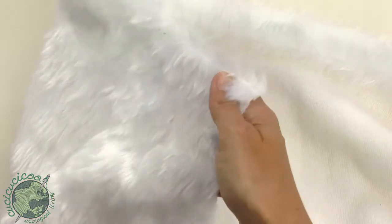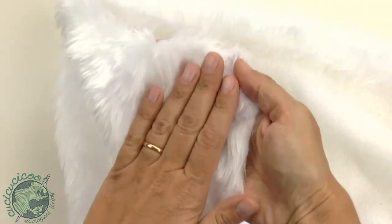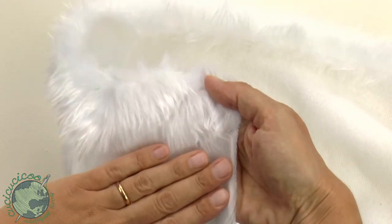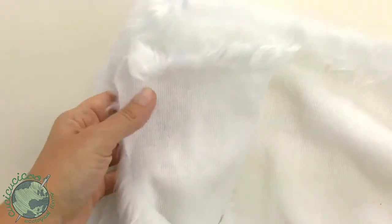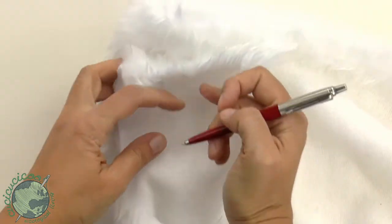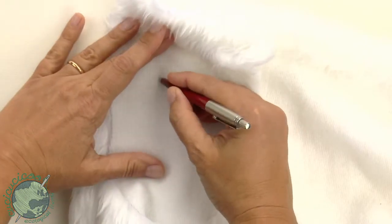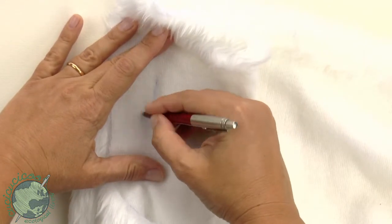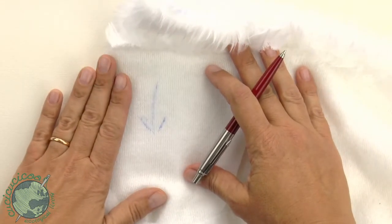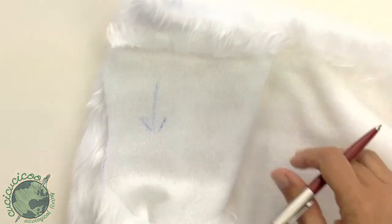Now what I suggest you do when you start is figure out what direction the nap goes in. Right now my nap goes downwards. So I'm going to flip over on the other side with my pen or marker or whatever you want to use, just make a little arrow. Draw a little arrow that goes in the direction of the nap. That way you'll know how to cut your fabric when you need to.